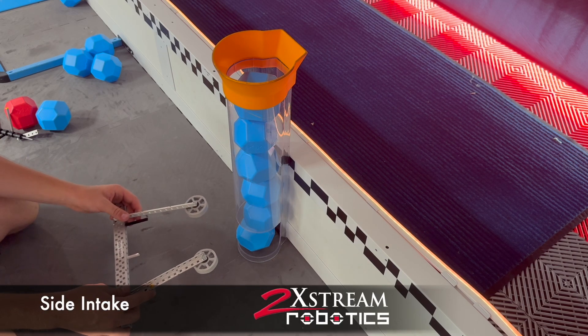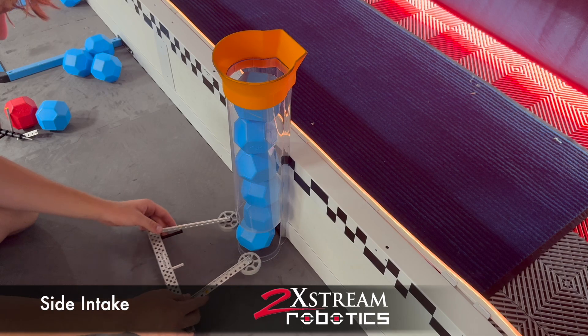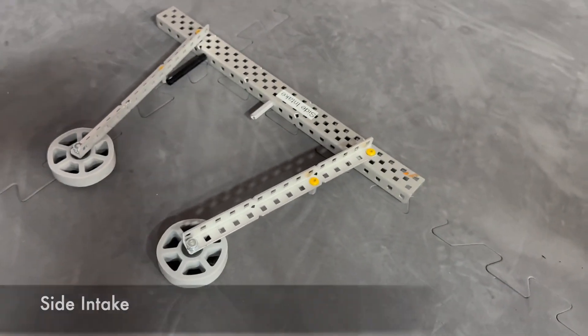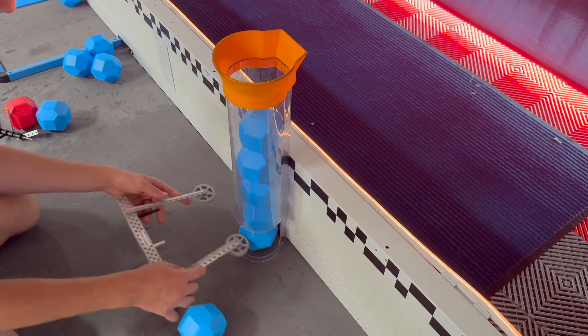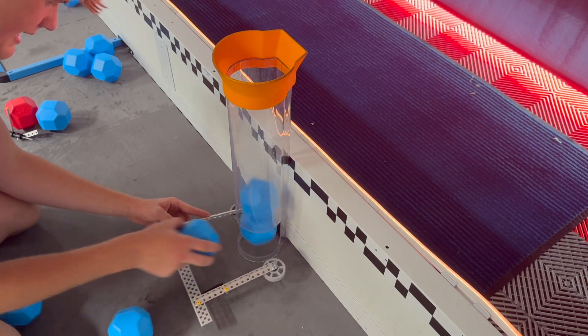So the second mechanism I want to talk about is a change-up style intake. This relies on two wheels that would be powered. Except this is just a prototype. And these wheels are going to spin and pull the ball in, pull the ball in, and just keep going.